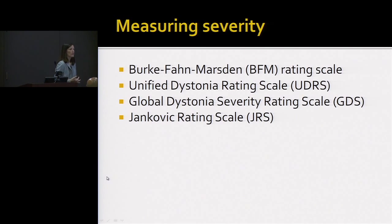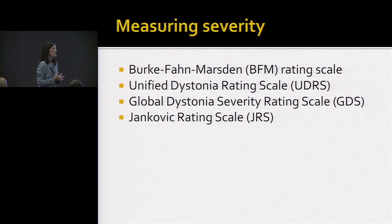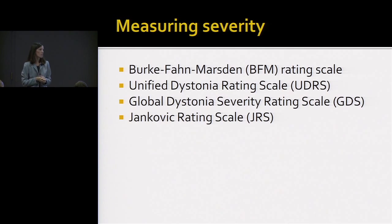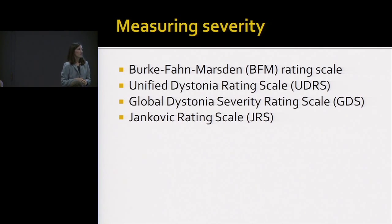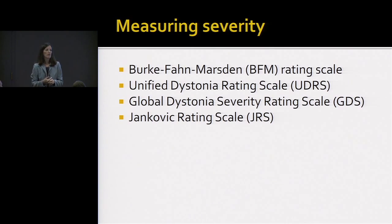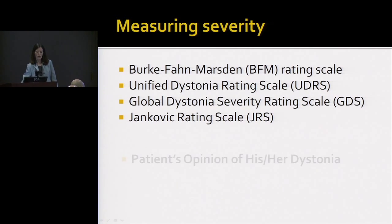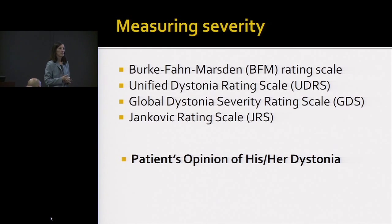Measuring severity from one doctor to another generally requires some kind of objective scales, and there are several: the Burke-Fahn-Marsden rating scale, the Unified Dystonia Rating Scale, a Global Dystonia Rating Scale which is a subset of the UDRS, and the Jankovic rating scale. All of these have their advantages and disadvantages, and they are used mostly in research.